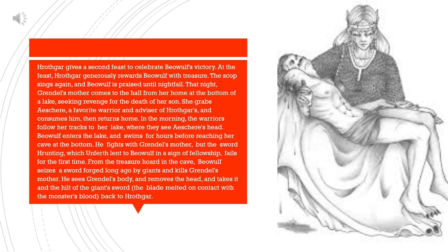In the morning, the warriors follow her tracks to her lake, where they see Ashir's head. Beowulf enters the lake and swims for hours before reaching her cave at the bottom. He fights with Grendel's mother, but the sword Ranting, which Anfert lent to Beowulf in a sign of fellowship, fails for the first time. From the treasure hoard in the cave, Beowulf seizes a sword forged long ago by giants and kills Grendel's mother. He sees Grendel's body, removes the head, and takes it and the hilt of the giant's sword. The blade melts, dissolved by the monster's blood, back to Hrothgar.